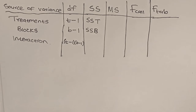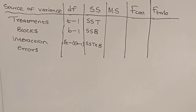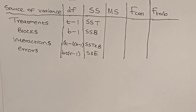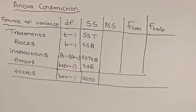The sum of squares for interaction is SS(T×B). We also need errors with degrees of freedom bt(r minus 1) and sum of squares SSE. Finally, we need the totals with degrees of freedom btr minus 1 and total sum of squares SSTO.